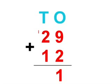Then you add the tens. 2 plus 1 is 3, plus another one is 4. And your answer is 41.